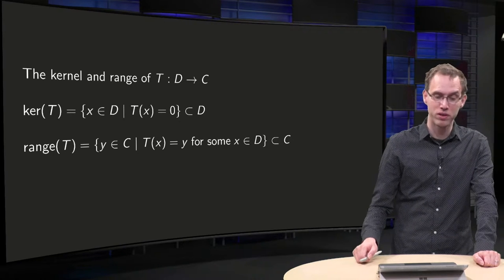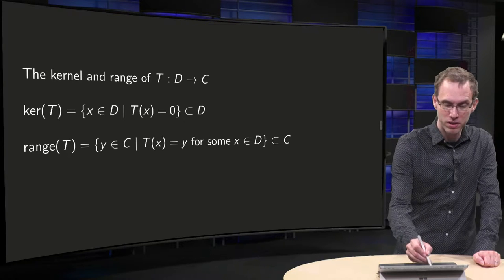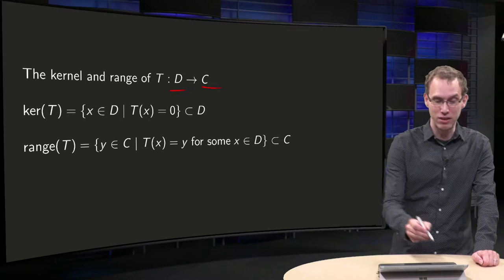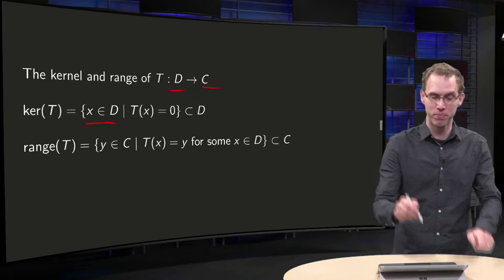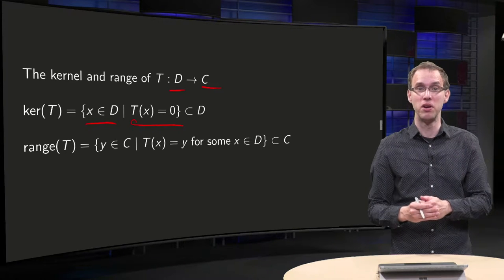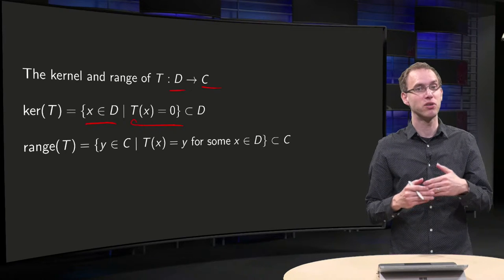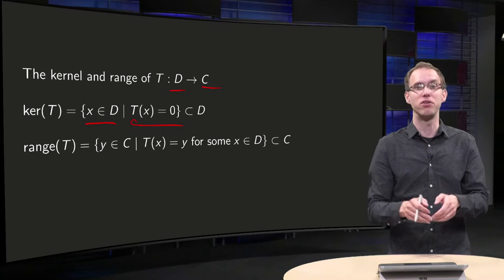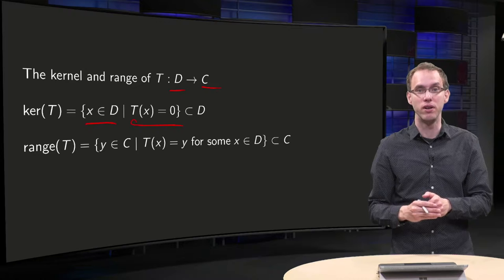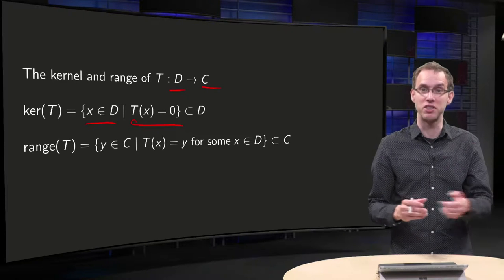What's the kernel of a mapping T from the domain to the codomain? It's kind of easy, it's a set of all factors in the domain that are mapped to zero. A set of all factors which image is zero. How can you see whether a factor is in the kernel or not? Plug it into your function. If you get zero then the variable is in the kernel, and if you don't get zero, it's not.